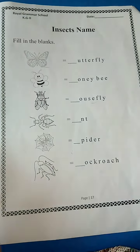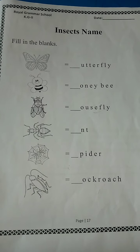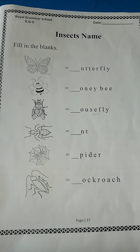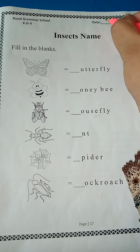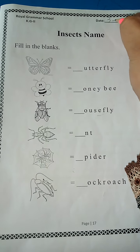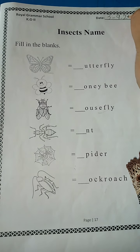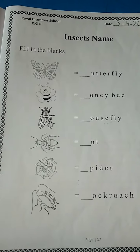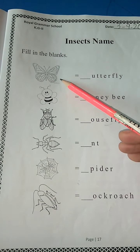So, this is page 17. And before we start the work, I will tell you again that you have to mention the date. Today is 3rd of September 2020. Let's read out.